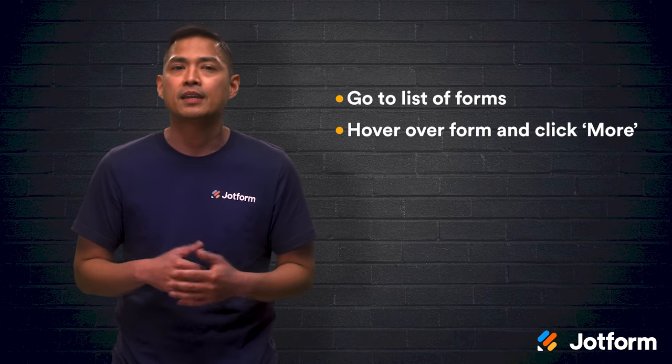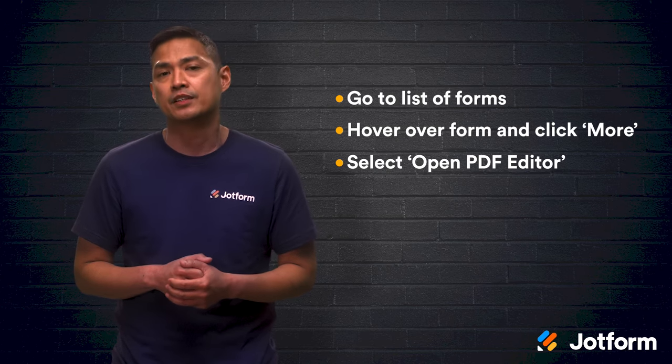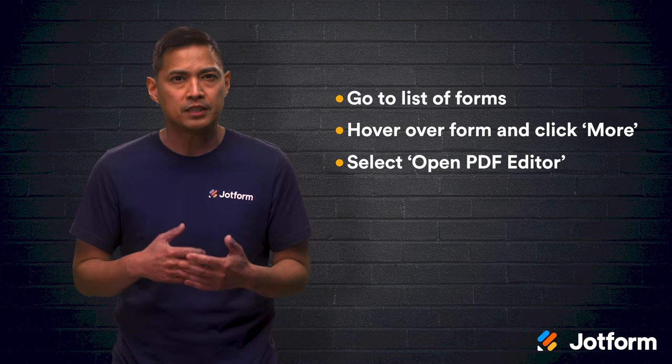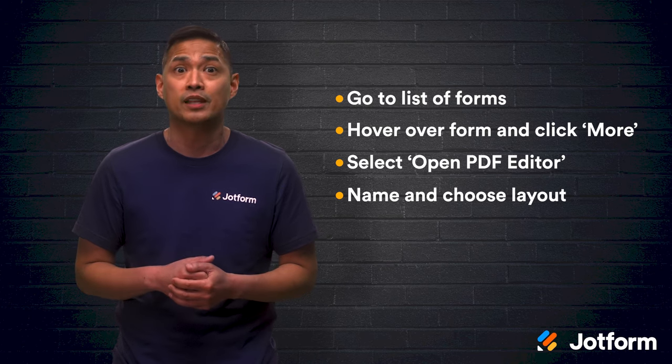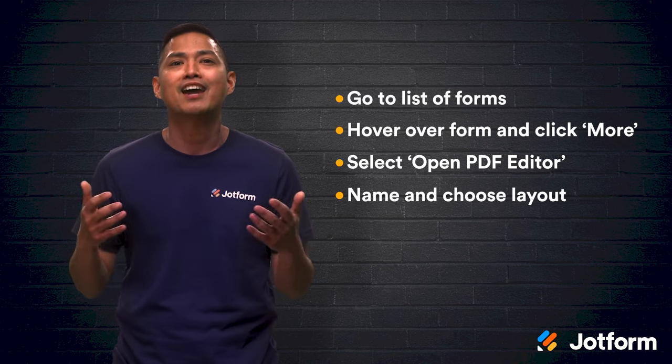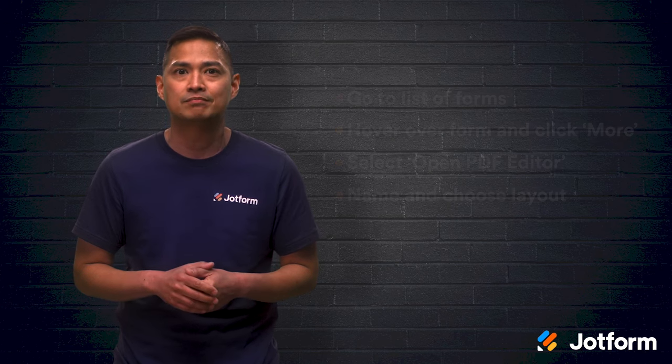Go to your list of forms and hover over the form you want to make a PDF. Click More and then select Open PDF Editor from under the data column. Once you're in the PDF editor, you just name your PDF and choose your layout. And boom — you have a bare bones PDF page just like that. Obviously you can go back and change any of your options later, but you're off to a great start as is. You have a basic title, layout, and form fields necessary.